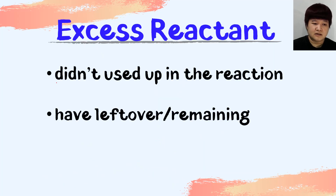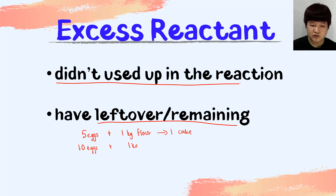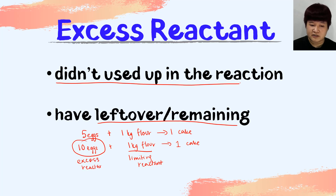Excess reactant did not finish in the reaction — in other words, you will have leftover or remaining reactant. Like the example just now: five eggs plus one kg of flour produces one cake. With 10 eggs and one kg of flour, you still produce one cake. The flour is your limiting reactant; the eggs are your excess and will have five eggs left over after the reaction.